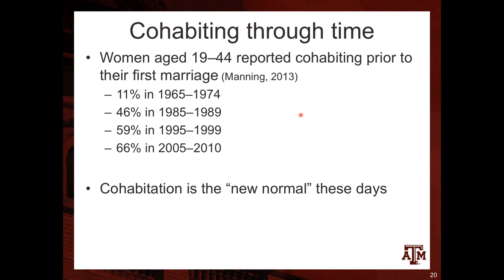Looking at cohabitation over time among women aged 19 to 44 who reported cohabiting prior to their first marriage: only 11% reported cohabiting before their first marriage back in 1965–74. That increased to 46%, then 59%, then 66% throughout subsequent decades. Now 66% of women report cohabiting before their first marriage in the 2005–2010 period — cohabitation is the new normal.